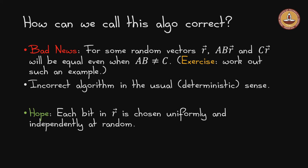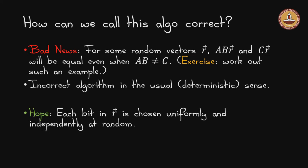That is the plan for today's segment. Let us start with some bad news first, hopefully to set the stage to give some good news later. If you recall the algorithm, you chose a random vector r, you multiplied ABr on the left hand side and Cr on the right hand side and checked if they were equal. If they were equal we reported AB equals C, otherwise not. If you deterministically choose r, you can always find an r for which the algorithm is going to be incorrect. An undergraduate algorithms course would not suffice to handle this problem because in the worst case this algorithm is incorrect, at least in the deterministic worst case sense.